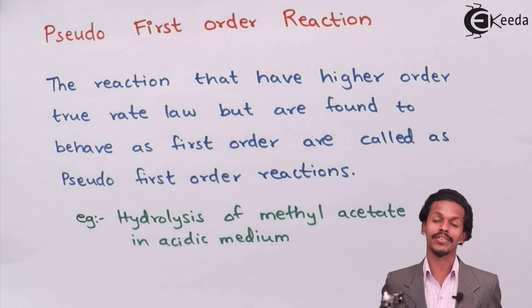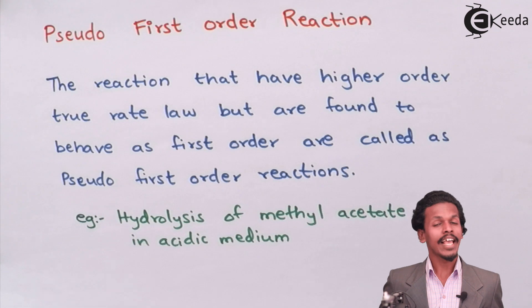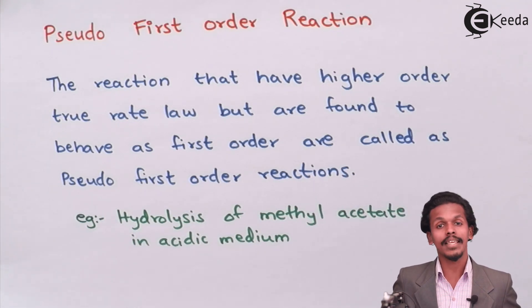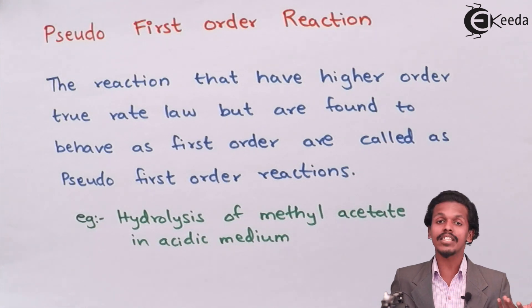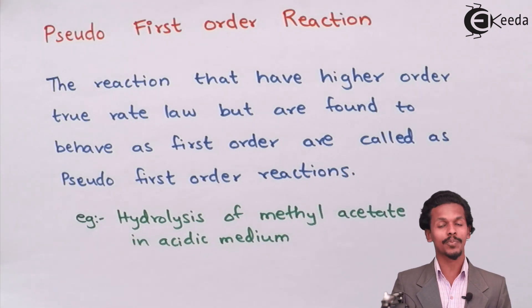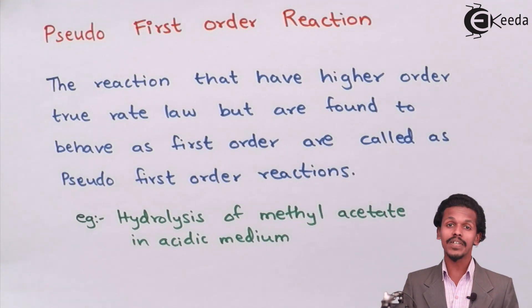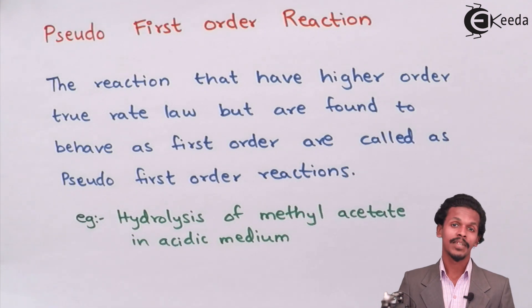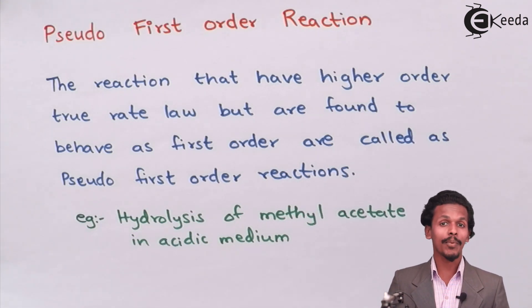As you know, rate law is dependent on the concentration of reactants raised to the experimental exponents, that is x and y. So these experimental exponents decide the order of reaction. But for a pseudo first-order reaction, this could get changed. How? We will talk about it by taking an example.